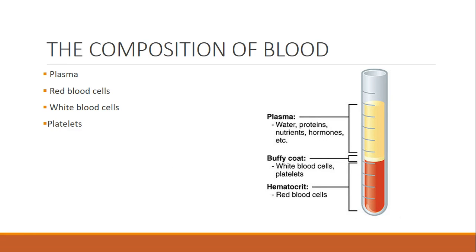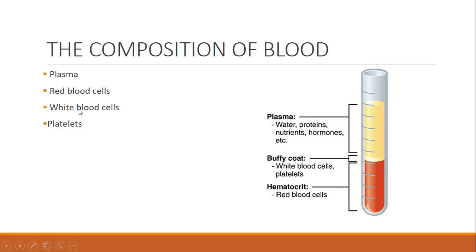The first thing we're going to be looking at is the composition of blood. What you need to know is the things on the left-hand side of the page, where we've got plasma, red blood cells, white blood cells, and platelets. The aim of this video is to give you a quick understanding of what each of these four things do.